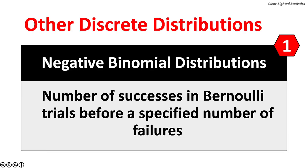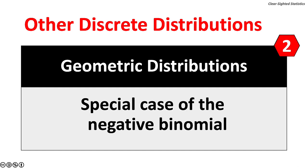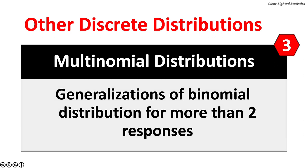There are three other discrete probability distributions not covered in clear-sighted statistics. The first are negative binomial distributions — the number of successes in Bernoulli trials before a specific number of failures. The second are geometric distributions, which are a special case of the negative binomial distribution. The third are multinomial distributions, which are a generalization of the binomial distribution for more than two responses.